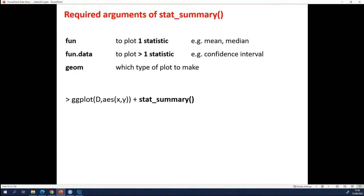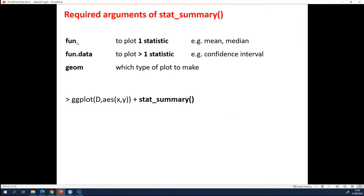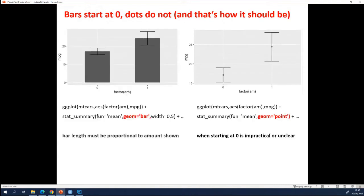So this function has arguments. And there are two arguments that you always have to specify. One is the geom, I already mentioned this one. It's bar for bars, point for dots, and error bar if you want to make error bars. That's easy. The other one, fun or fun dot data, specifies which statistic you want to calculate. When do you use fun? You use fun when you only need to calculate one statistic. So for bars or for dots, they represent a median, one median, one for each group. So he has to calculate one statistic, a median. Or they represent a mean, one for each group. So that's one statistic. So then you use fun.